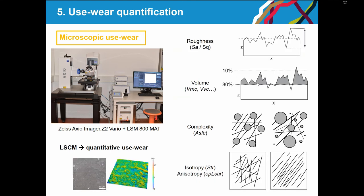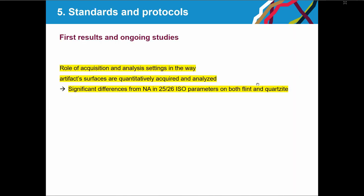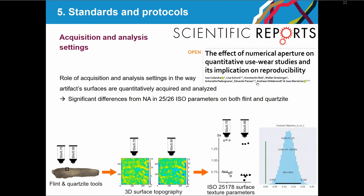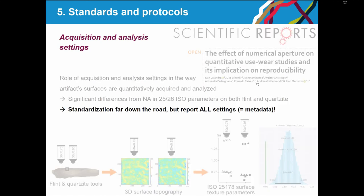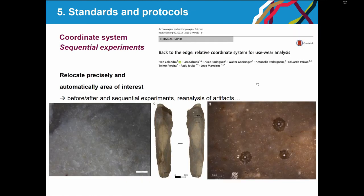Quantification is important, but it's also important to establish how we quantify. We recently investigated how different objective settings and characteristics affect final results — and they clearly do. Although not everyone has access to the same equipment, it's important that we report all settings when doing quantification so that data can be compared. We also developed sequential experiments using coordinate systems to scan exactly the same spot before and after experiments, enabling reproducible measurement of how useware forms.